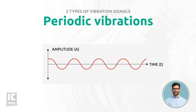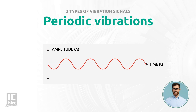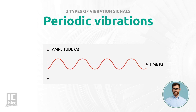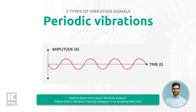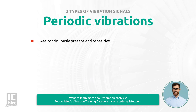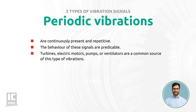Periodic vibrations are vibrations that are continuously present and repetitive. They are the most common form of vibrations on rotating machinery. The behavior of these signals is predictable and therefore used for vibration analysis. Rotating equipment like turbines, electric motors, pumps, or ventilators are a common source of this type of vibration.